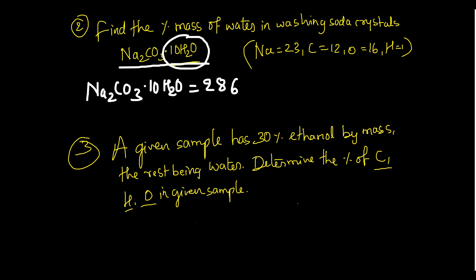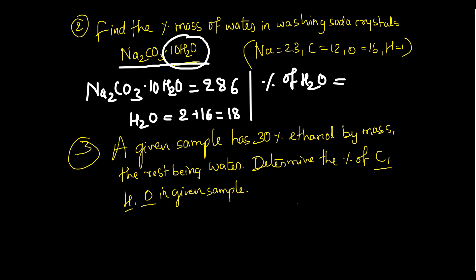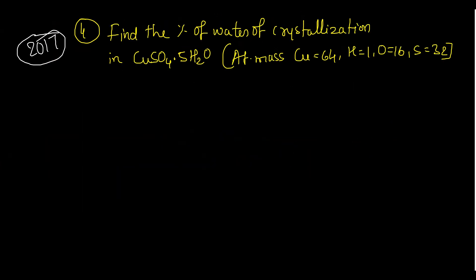Here water is not an element but a molecule — you can use the same formula. Molecular mass of water: 2×1 (hydrogen) + 16 (oxygen) = 18. There are 10 molecules of water, so 10×18 = 180. Percentage of water = (180 ÷ 286) × 100 ≈ 62.9%.